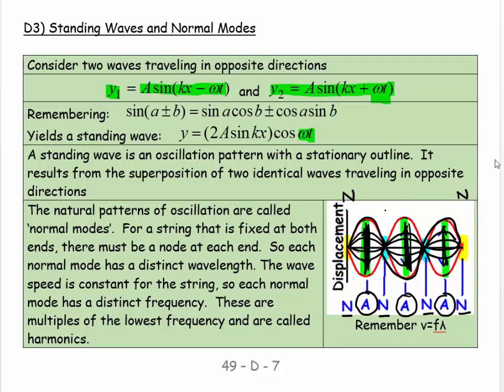So we can say a standing wave is an oscillation pattern with a stationary outline. It results from the superposition of two identical waves traveling in opposite directions. The natural patterns of oscillation are called normal modes. For a string that is fixed at both ends, there must be a node at each end. So each normal mode has a distinct wavelength.